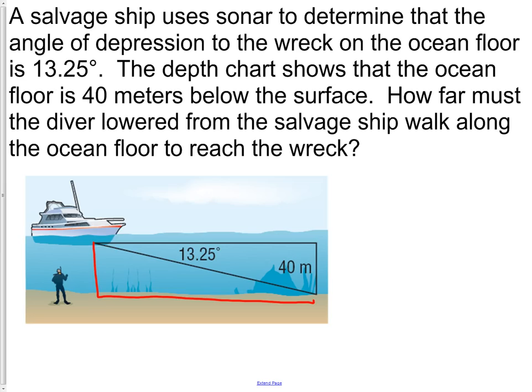We're going to use our SOHCAHTOA to find the distance that the diver was lowered. He needs to walk across. The distance across the top and the distance across the bottom, if you look at it, it kind of looks like a rectangle, will be the same. We're going to use opposite the 13.25 and adjacent to the 13.25. That means tangent 13.25 will equal opposite over adjacent.